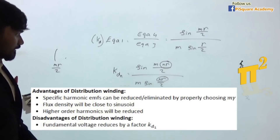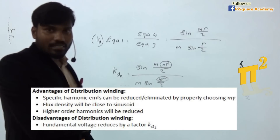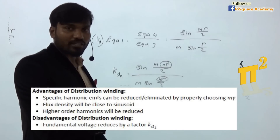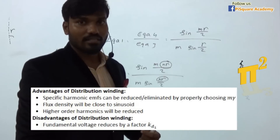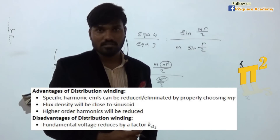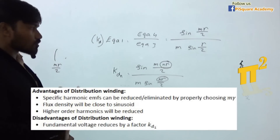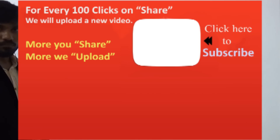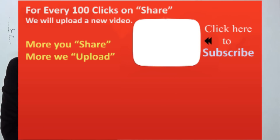Even though distributed winding gives less EMF, we still use it because it reduces harmonics — just like short pitching. I hope you understand these two concepts of pitch factor and distribution factor. Please like and share the video with your friends, and subscribe to our channel for more such videos. Thank you.